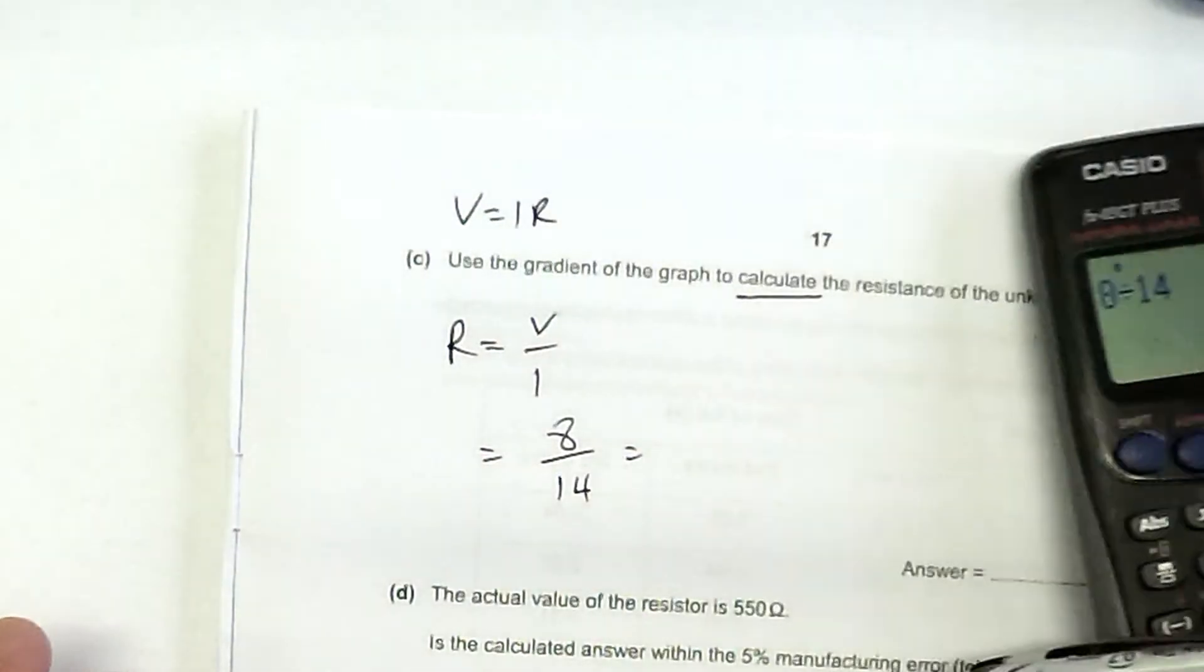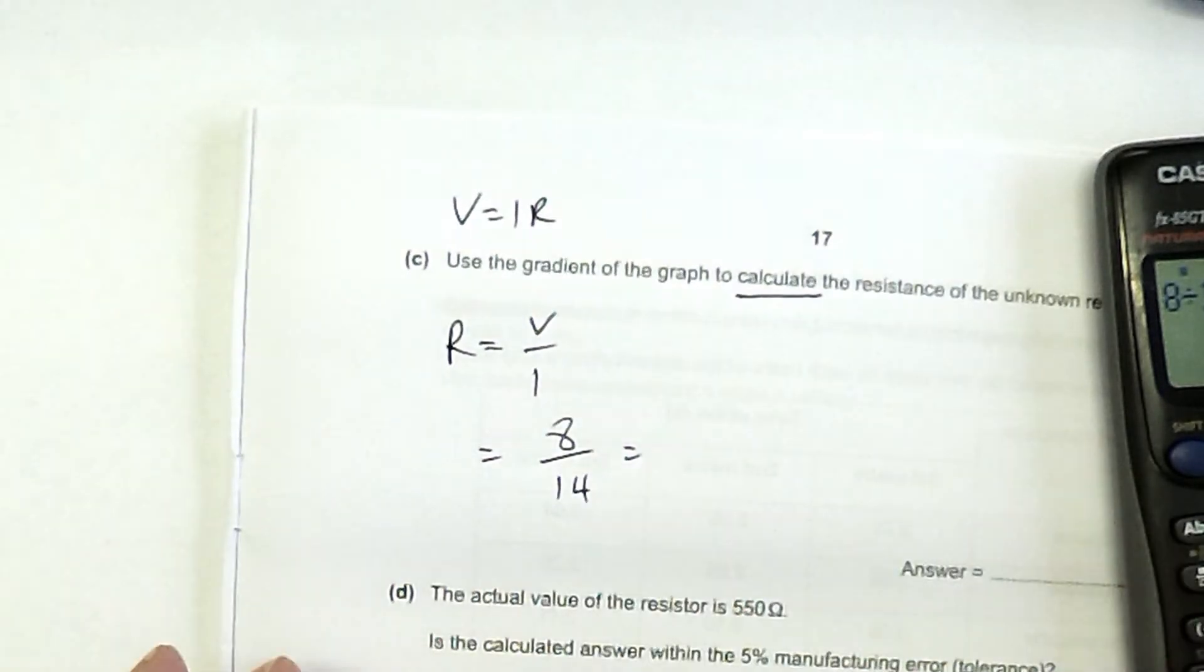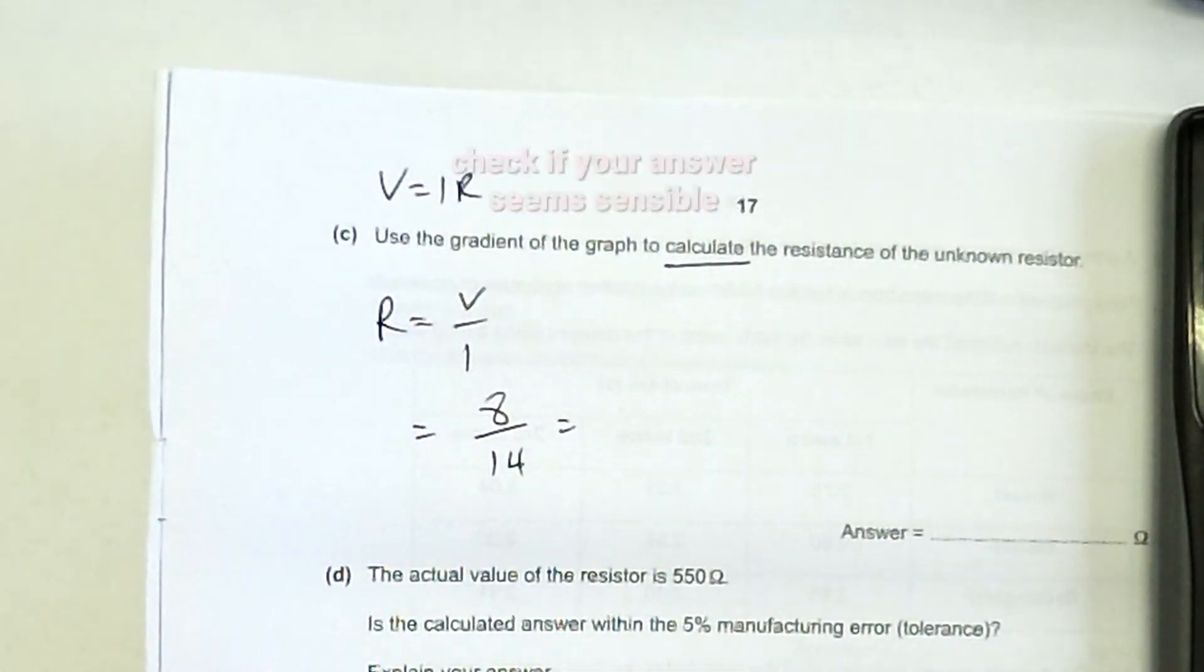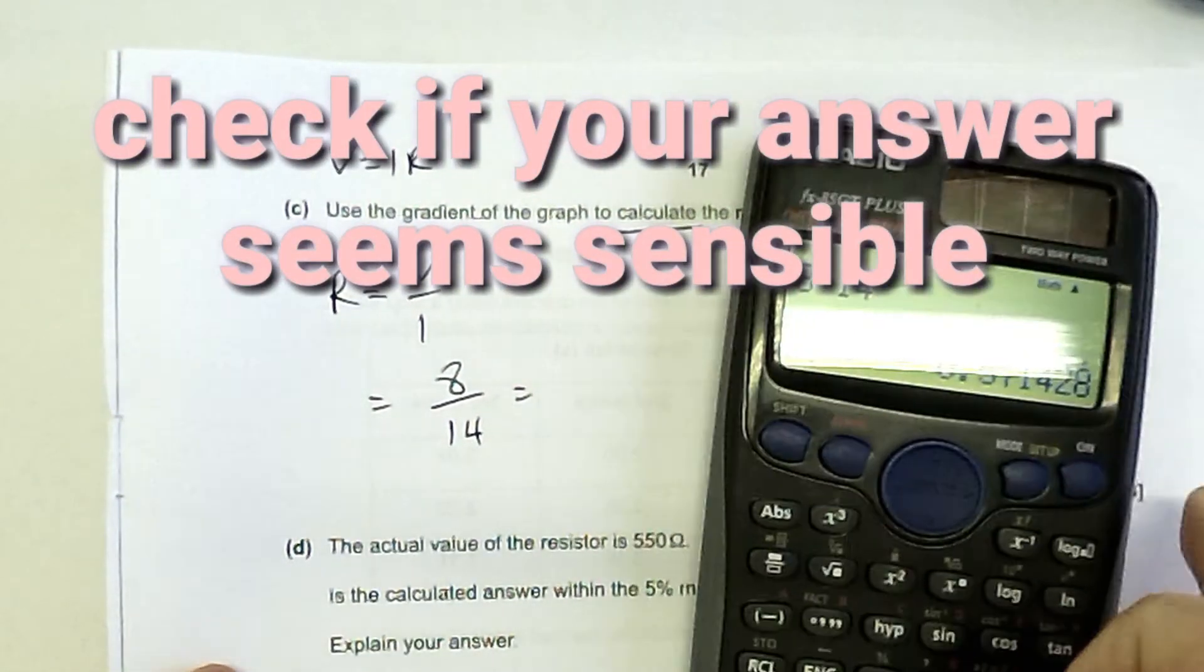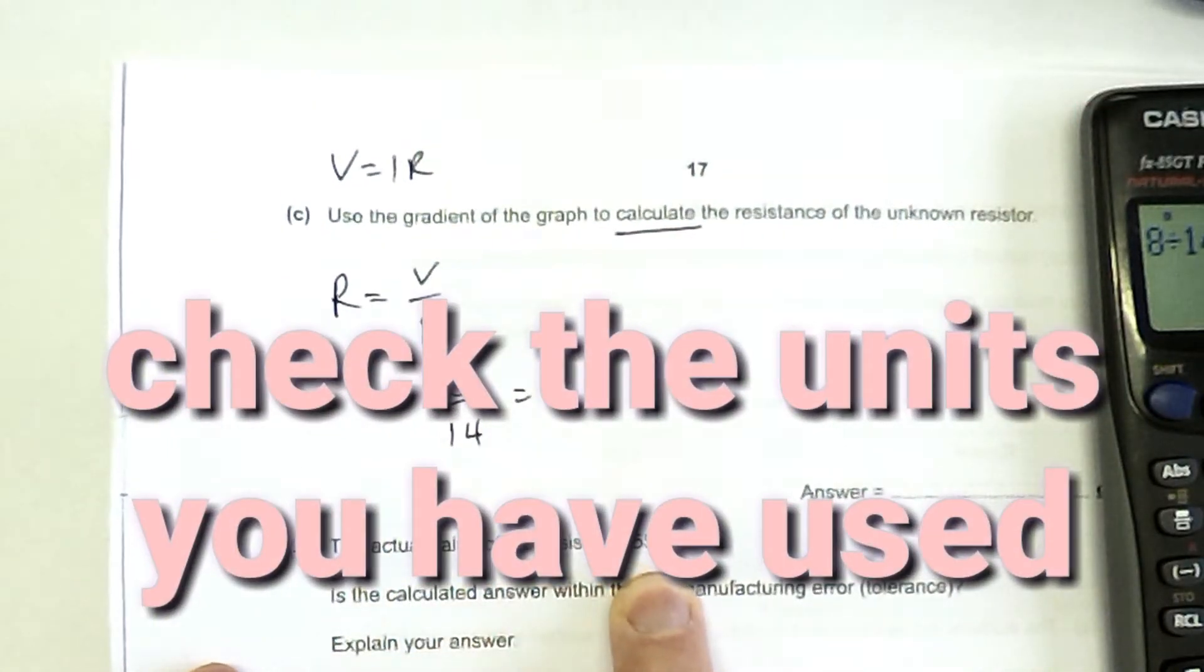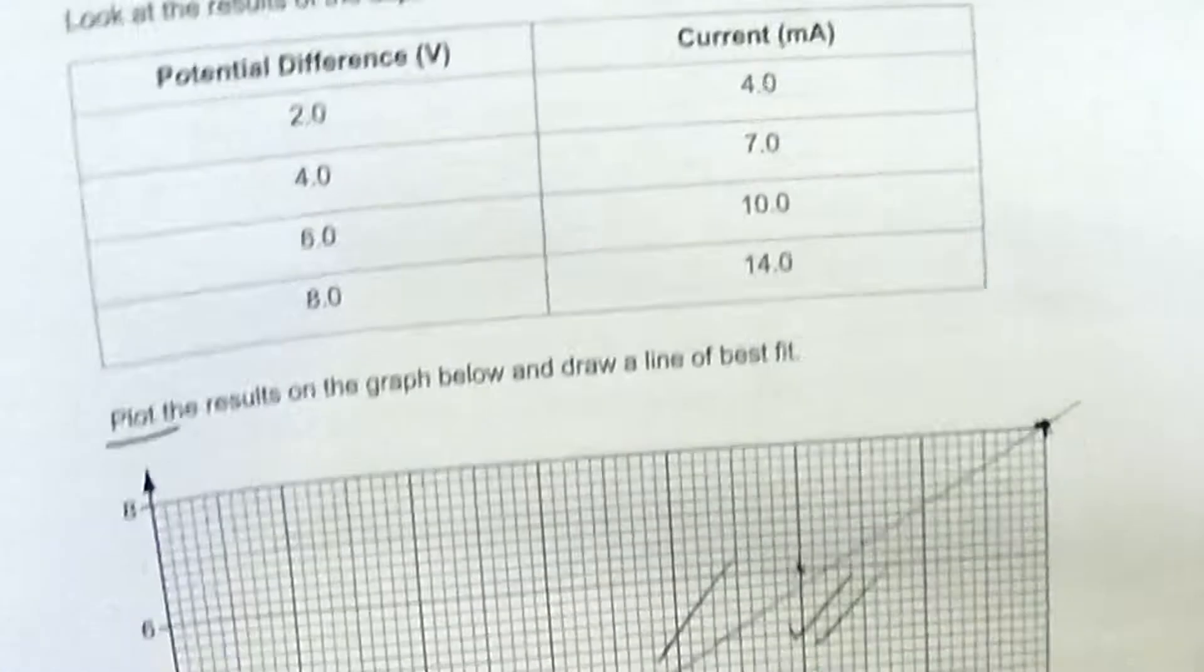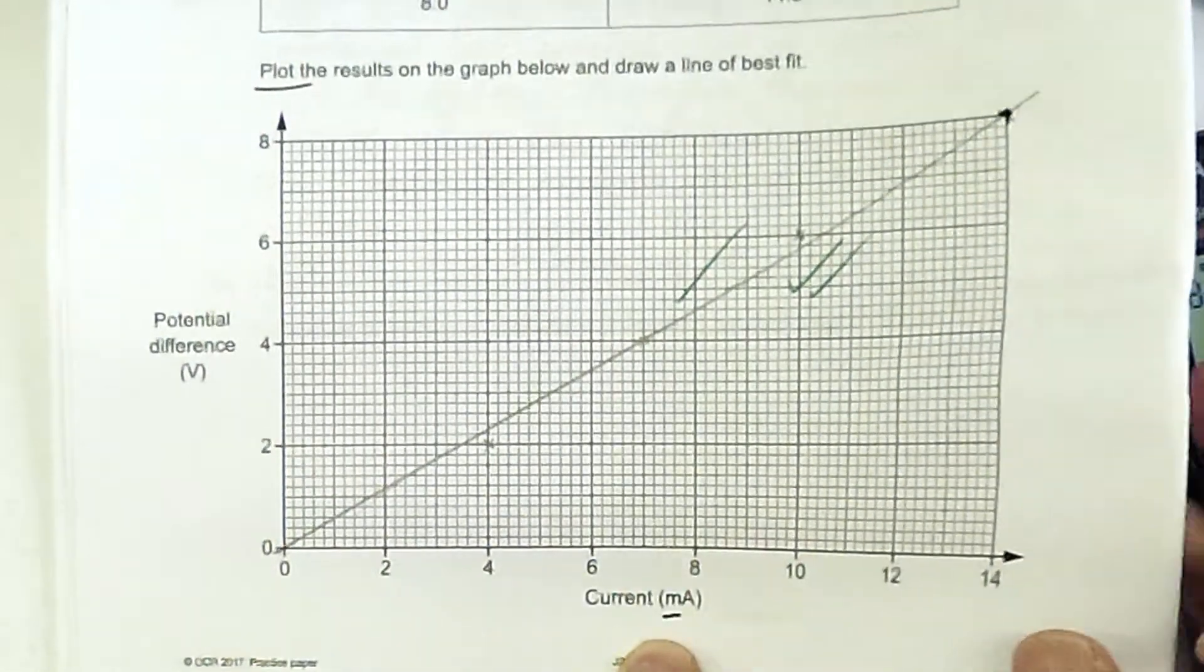Aha, well, I did actually make a deliberate error there because I want you to be aware of something that seems quite low. It seems quite low for any resistor I've ever used. I've never seen half an ohm resistor. Maybe an individual wire might be a resistance of about half an ohm. When you look at the next question, it says the actual value is 550 ohms. Well, that's a clue. There's something gone wrong there, isn't it? And that's because I have deliberately rushed this.